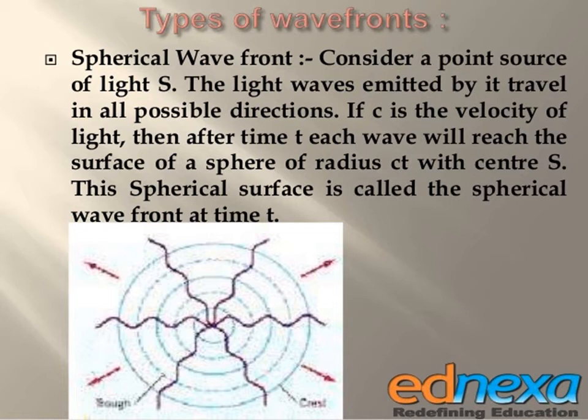This is the spherical wavefront. When light waves are emitted by a point source and travel in all possible directions, if C is the velocity of light, then after time T, each wave will reach the surface of a sphere of radius CT with center S.